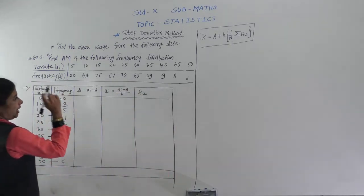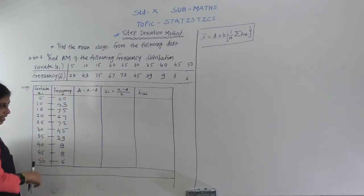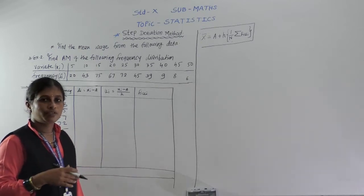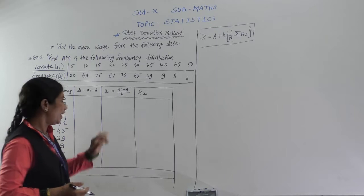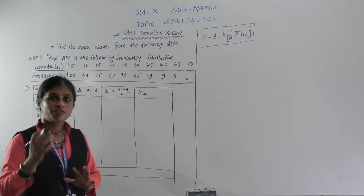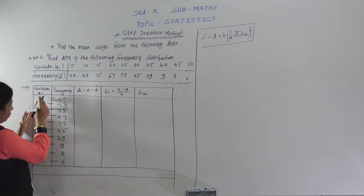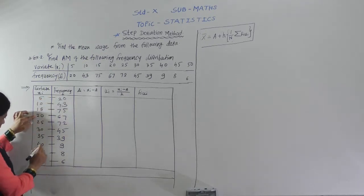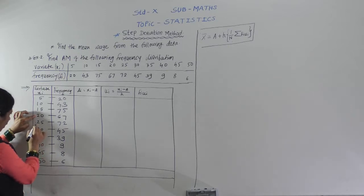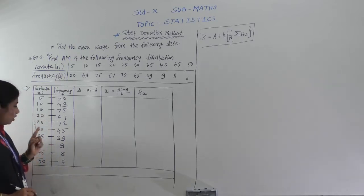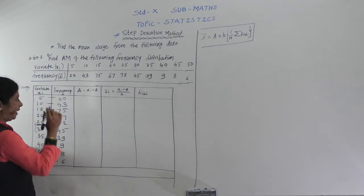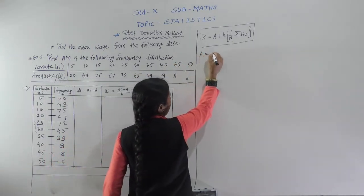First we find di = xi minus A. We count the number of observations: 1, 2, 3, 4, 5, 6, 7, 8, 9, 10 — there are ten observations, an even number. So the middle two values are the 5th and 6th, which are 25 and 30. We can take either as A, so we take A = 25.